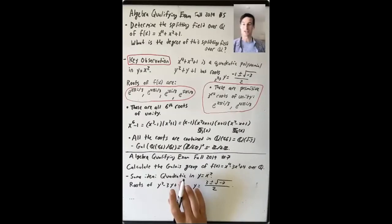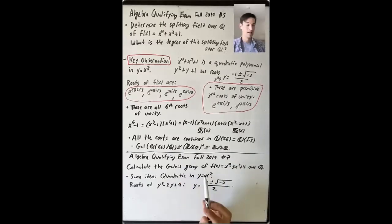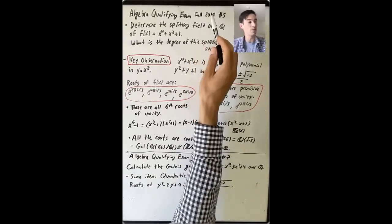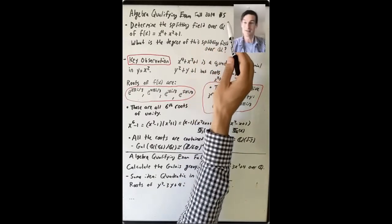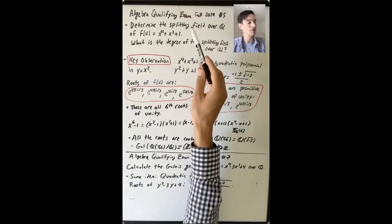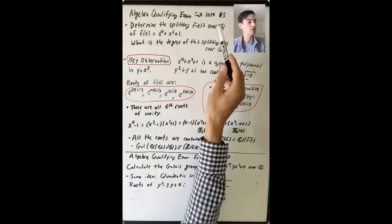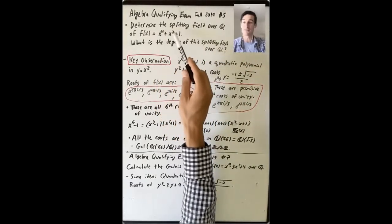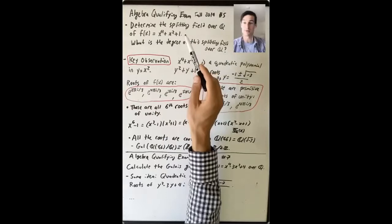I want to end this lecture by talking about some examples of computing the Galois group of a quartic polynomial. This first example comes from the algebra qualifying exam from fall 2014, number five, and asks you to determine the splitting field over Q of f(x) = x⁴ + x² + 1.